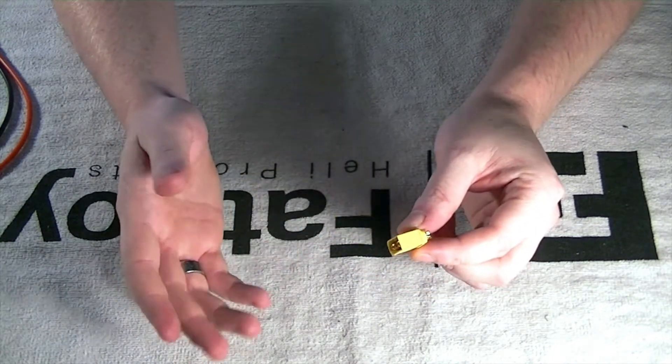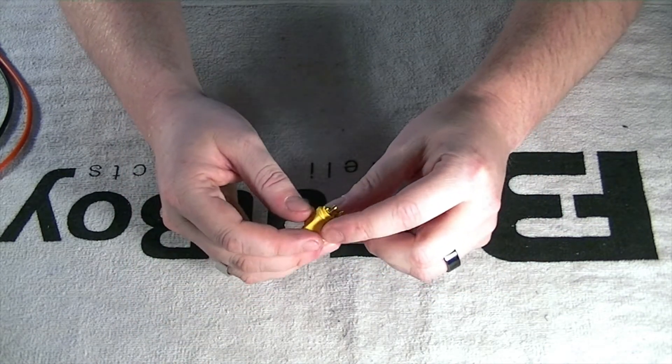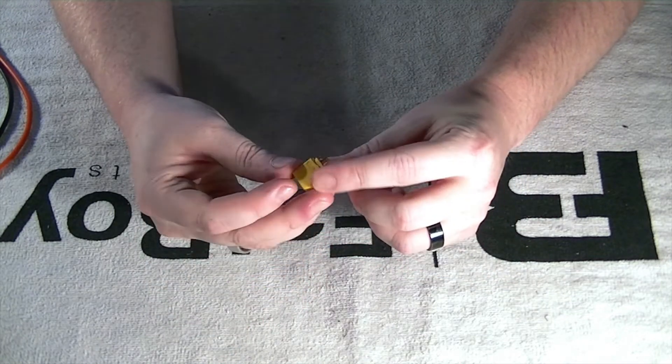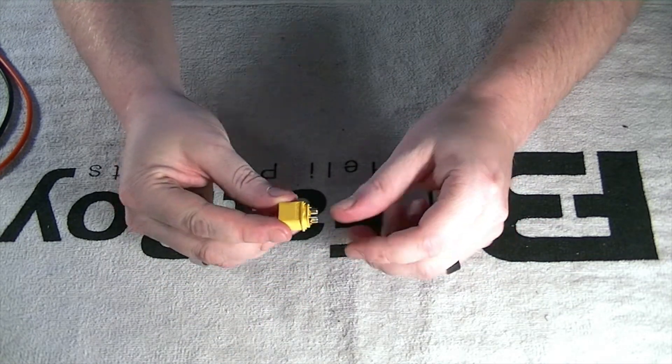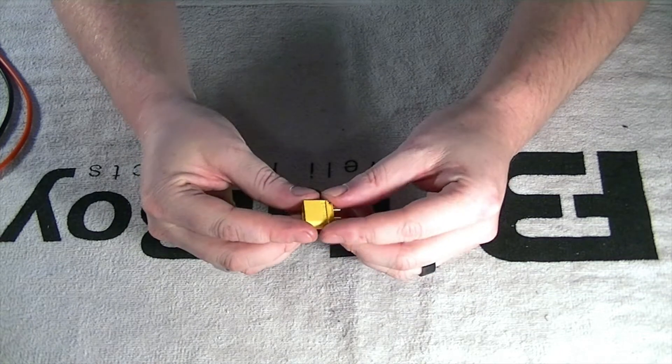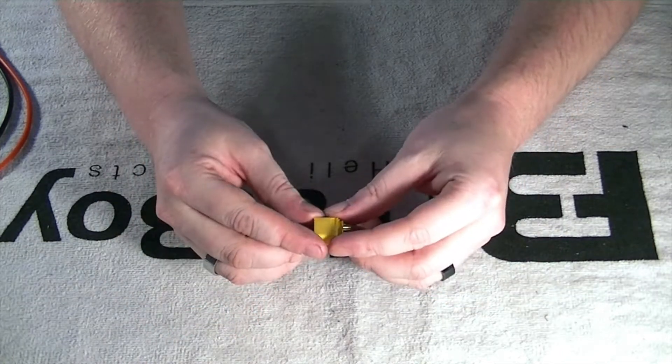I've got a couple of other soldering videos on my channel like bullet connectors and deans and whatnot so I thought maybe I would throw in the XT60 real quick. It's a pretty simple connector, of course as always you have a male and a female counterpart.